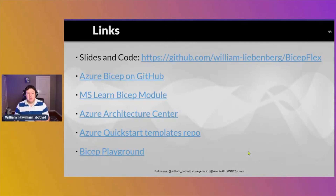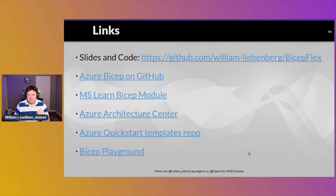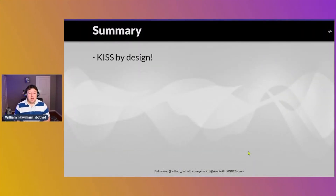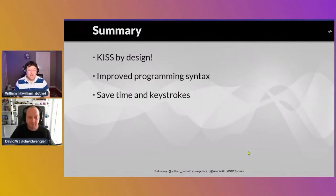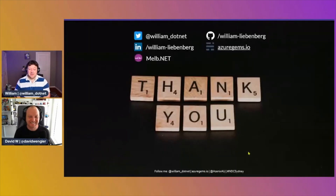Here are some useful links — I'm going to put all my code and slides on my GitHub repository, and I'll put the link in the comments too. There are links to Azure Bicep on GitHub, Microsoft Learn, the Architecture Center for architecture templates — some already in Bicep — and the Bicep Playground where you can convert between Bicep and ARM. To summarize: KISS by design — Bicep is simple, much easier than ARM JSON, with a great improvement in programming syntax. Less keystrokes, registries are awesome, and there's more coming since we're not even at version 1 yet. Infrastructure as Code is fun again!